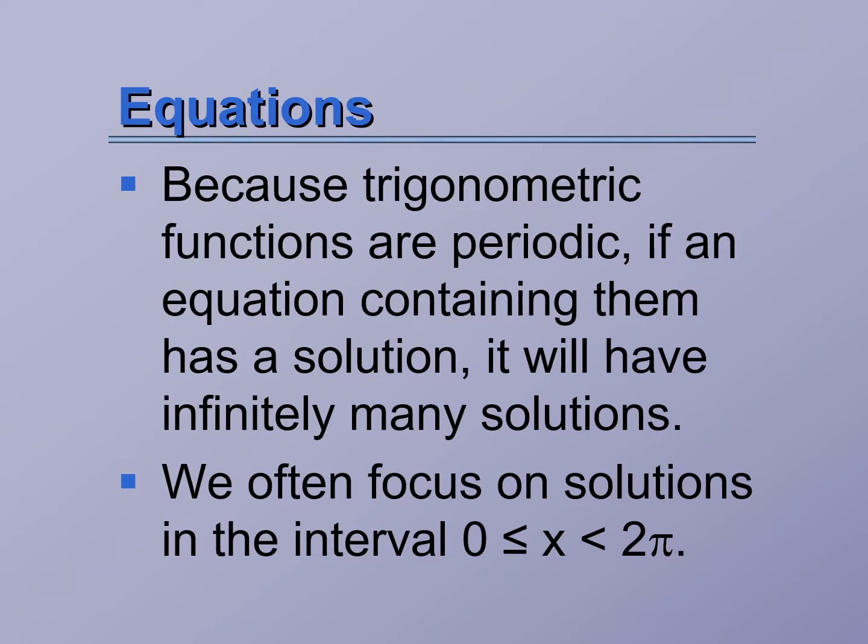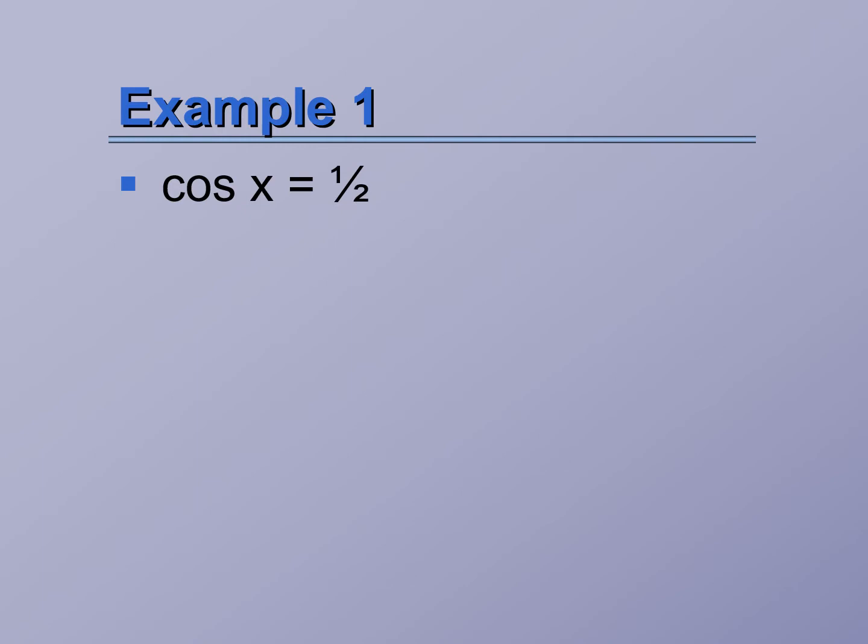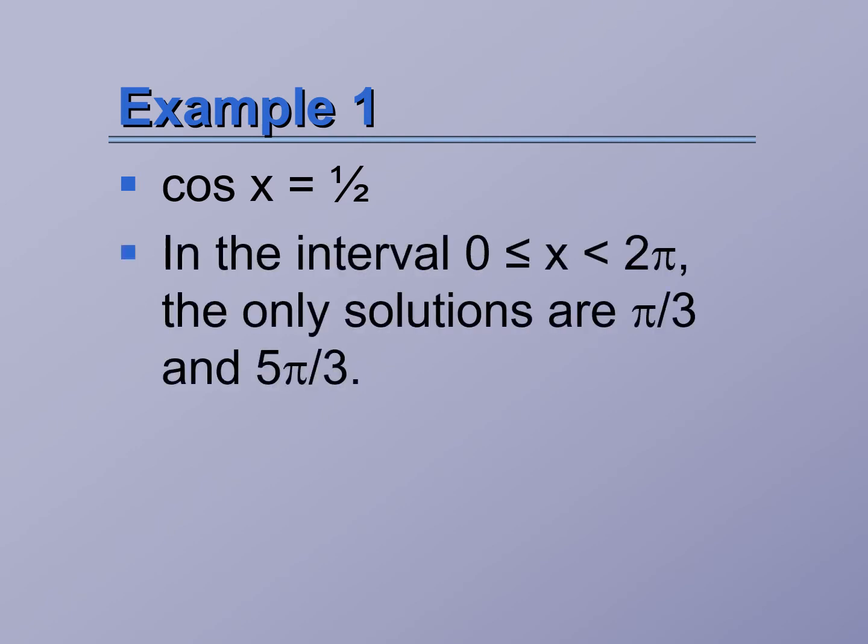For example, if I'm trying to solve for x here and I have cosine of x equals one half, which means I'm looking for a cosine inverse of one half. So if I'm looking at the interval zero to two pi, there are only two solutions that give me one half. They would be pi over three and five pi over three.